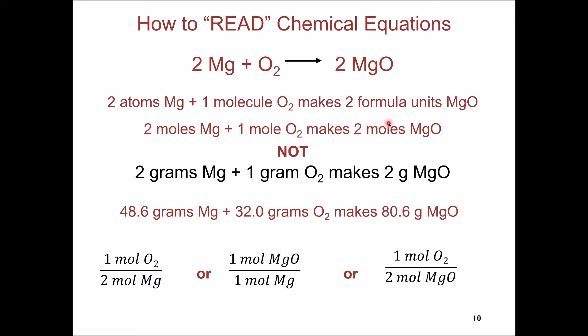It's not two grams of magnesium reacting with one gram of oxygen to make two grams of magnesium oxide. This is not correct because it violates the law of conservation of mass — you start with three grams and end up with two grams.